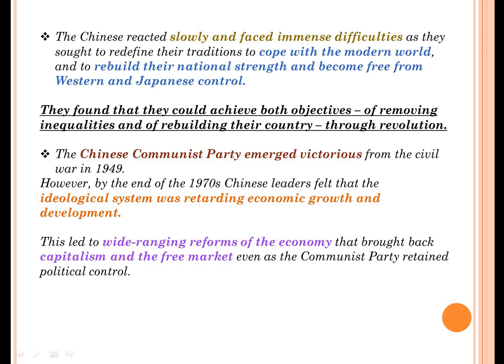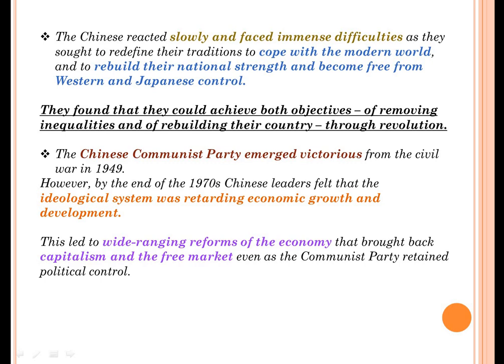The Chinese Communist Party was very victorious, especially after the Civil War in 1949. By the end of the 1970s, Chinese leaders also felt that an ideological system was actually retarding economic growth and development. They felt the urgent need to revise their economy, development, and ideology. This eventually led to a lot of reforms in the economy, which brought back capitalism and the free market, regulated by the Communist Party, which monitored and retained political control.